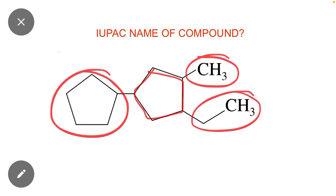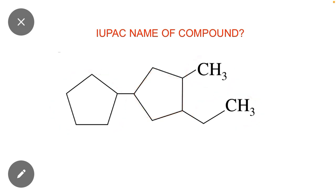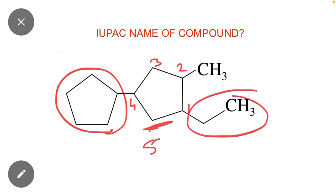Now the numbering will start from this carbon: one, two, three, four, and five. So it contains 4-cyclopentyl, 1-ethyl, and 2-methylcyclopentane.